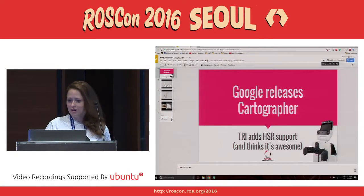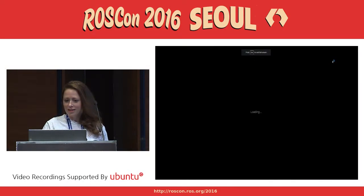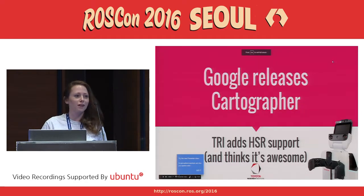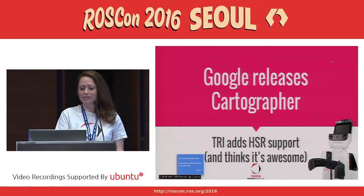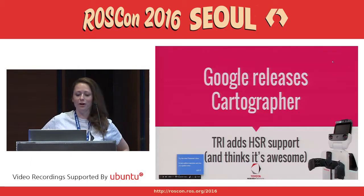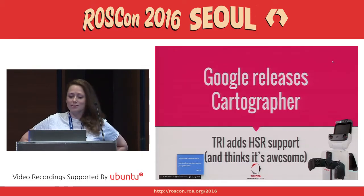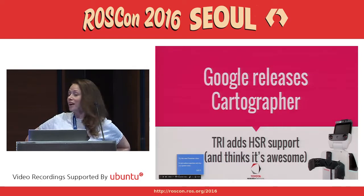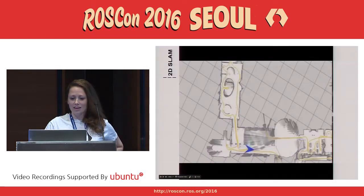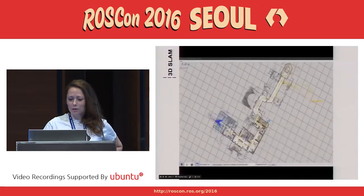If you didn't know, this week Google released Cartographer, which is a really awesome open-sourced SLAM library. I work for TRI, and we added support on our robot HSR, and we really think it's awesome. Let's go ahead and see how it works.